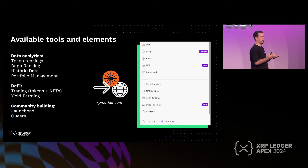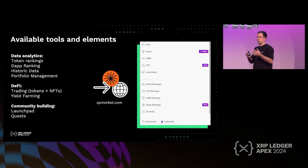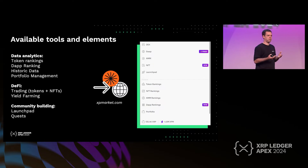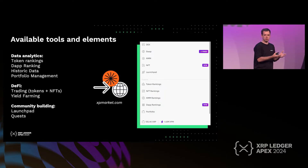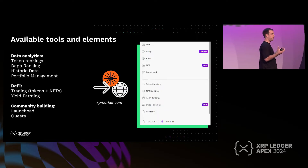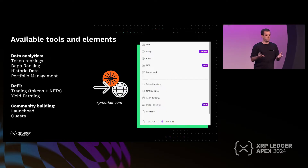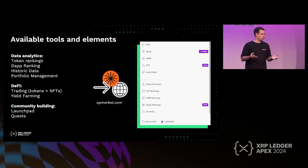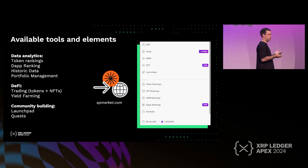We have a token aggregator and token rankings, both for fungible and non-fungible tokens. This is where you can look at the trading volume, market caps, and interest. It should help you drive your decisions whether you're a retail user or a developer. If you're a developer, it helps you understand the market you're competing in and who your competitors are — what's the size of the market and the turnover. If you're a retail user, it will help you decide whether to buy a certain token or look into it further.